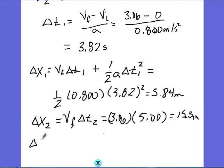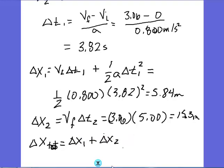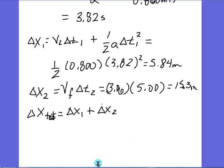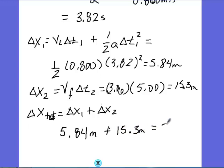My total distance is the sum of distance 1 plus distance 2. So 5.84 meters plus 15.3 meters gives me a final answer of 21.1 meters.